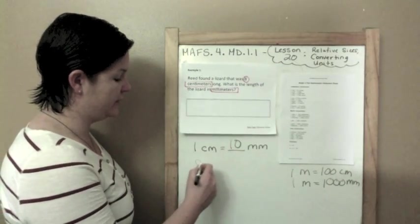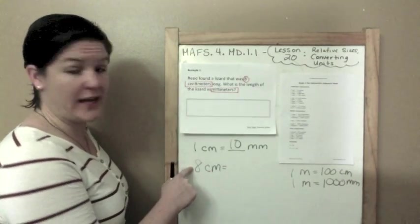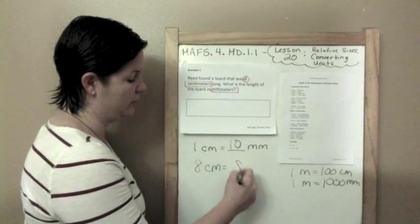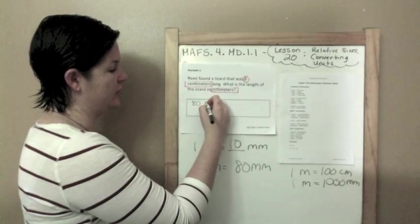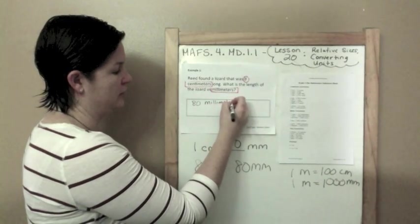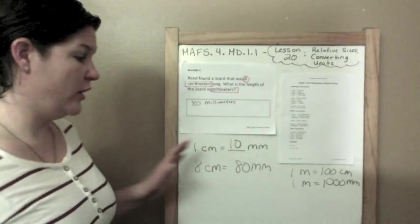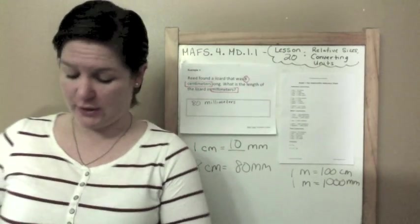So 8 cm, 1 times 8 is 8, so 10 times 8 would be 80 mm. That is our answer. I'm going to write out the word millimeters. Notice that all of my work went outside of the box and only my answer went inside of the box. Make sure you all do that.